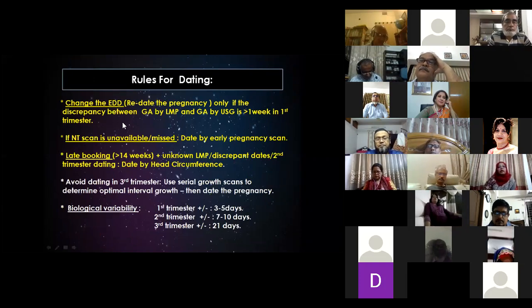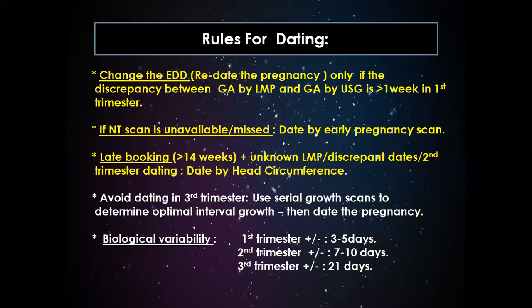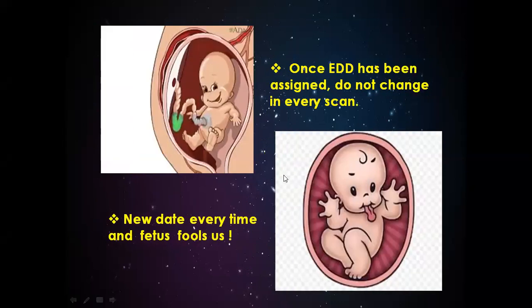There are certain rules on dating. We can redate the pregnancy only if there is a discrepancy between GA by LMP and GA by ultrasound of more than 7 days in the first trimester. If the antenatal scan is unavailable or missed, we can date by early pregnancy scan. In cases of late booking, unknown LMP, or discrepant dates, we can use head circumference for dating. Once an EDD has been assigned, do not change it at every scan.